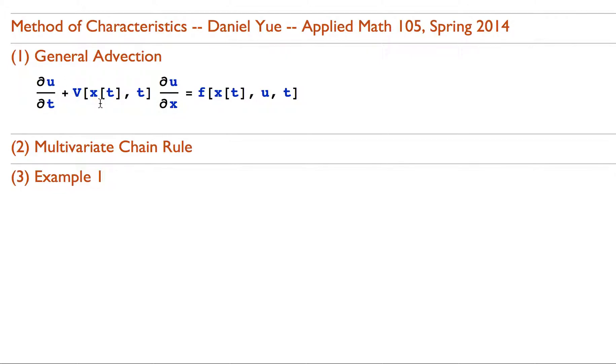Some function's time derivative plus some other function times that same function's derivative with respect to position equaling some other arbitrary function. At first this looks like a mess, but the method of characteristics allows us to reduce this first-order partial differential equation into two first-order ordinary differential equations, which are much easier to solve.